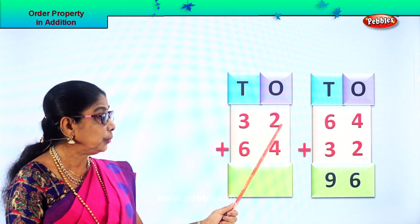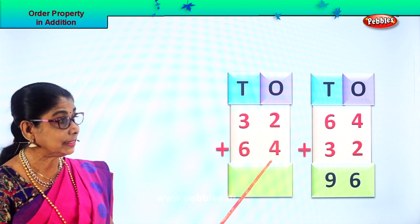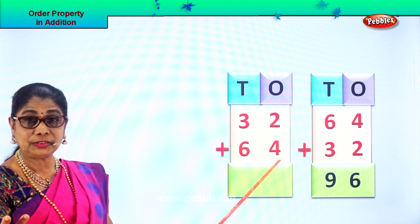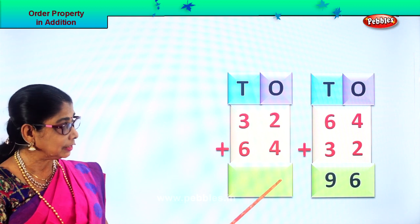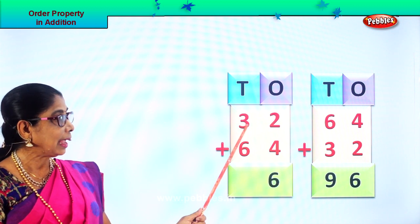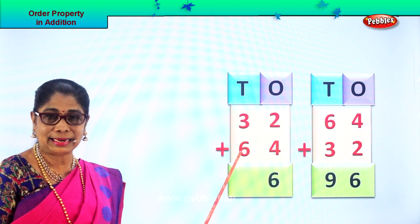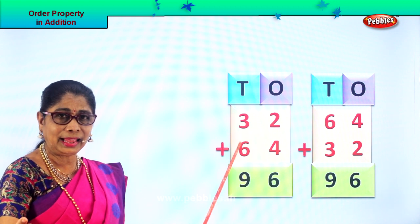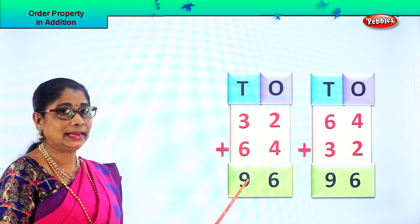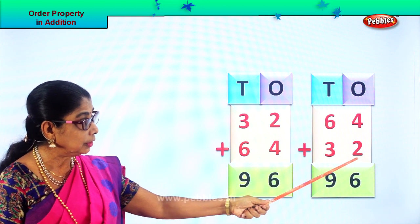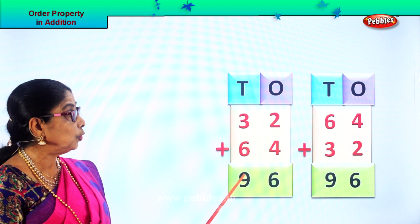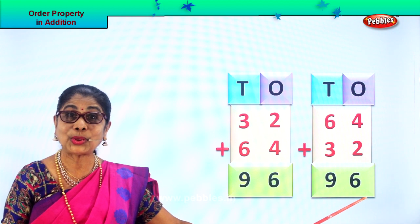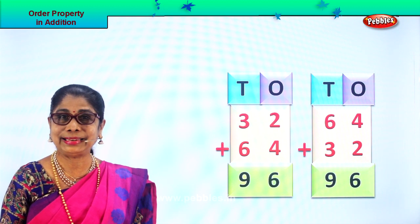Now here you have 32 plus 64. Add the ones place first: 2 plus 4 ones — 4 in the mind, 2 on your fingers. After 4: 5, 6. You get 6 ones. Then 3 tens and 6 tens — 6 in the mind, take 3 on your fingers. After 6: 7, 8, 9, 10. Whether it is 64 plus 32 or 32 plus 64, your answer is 96. Order property of addition!